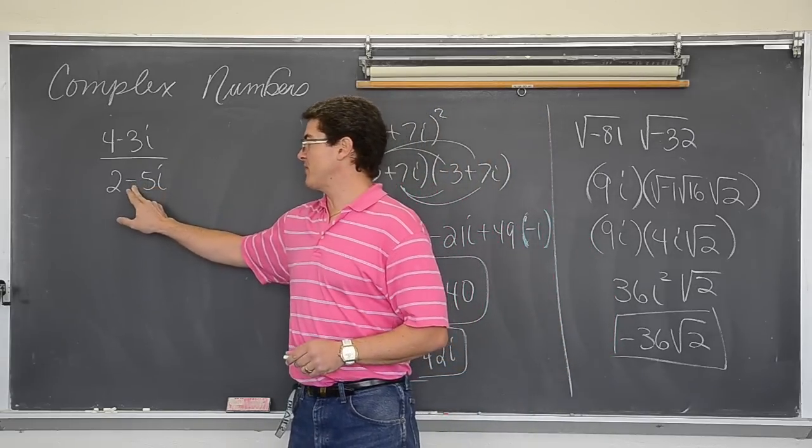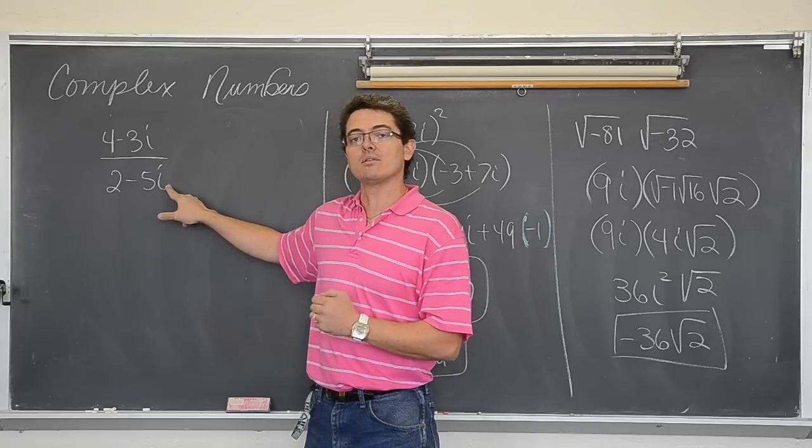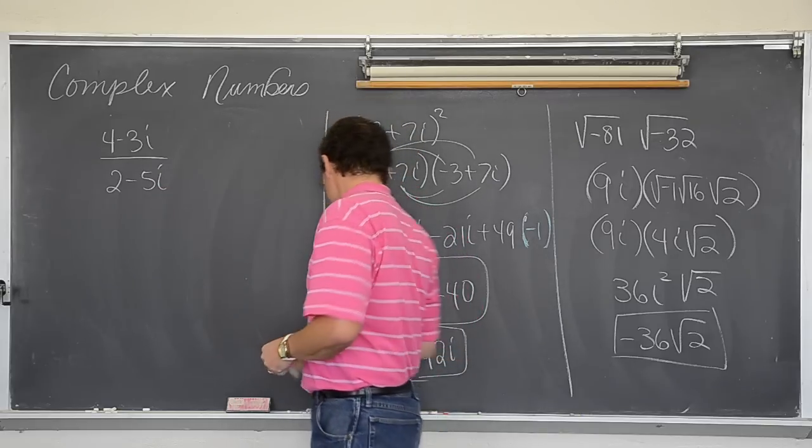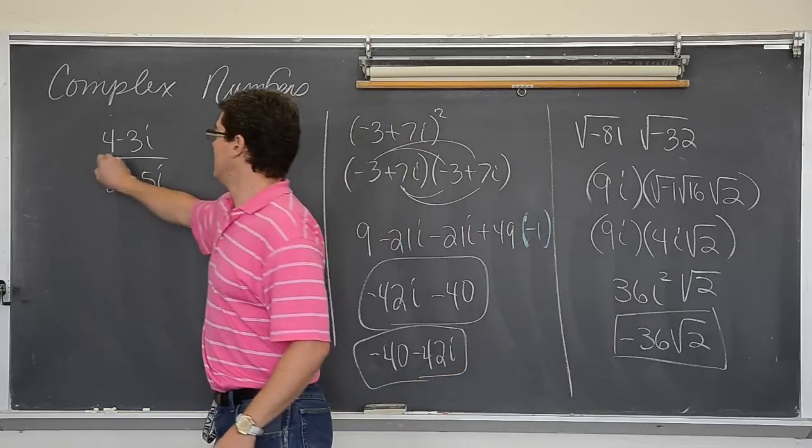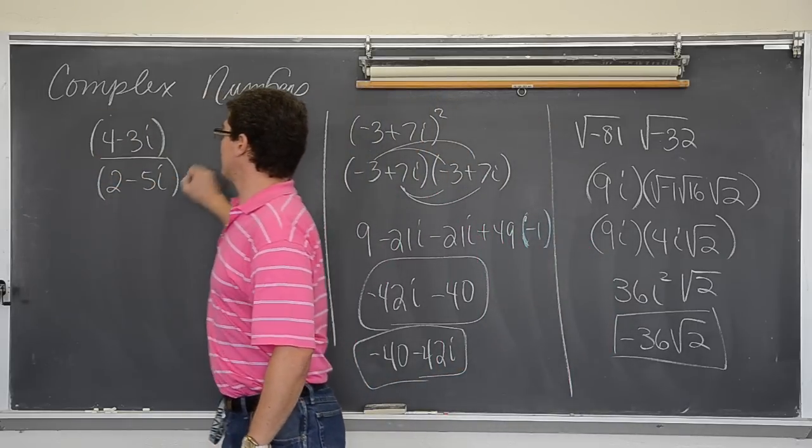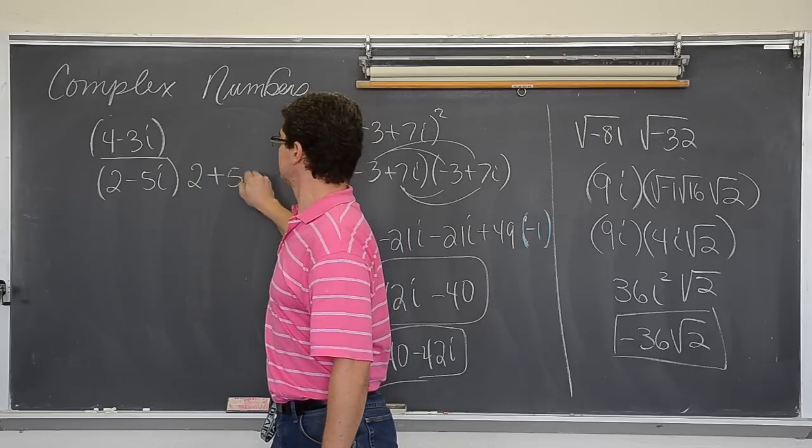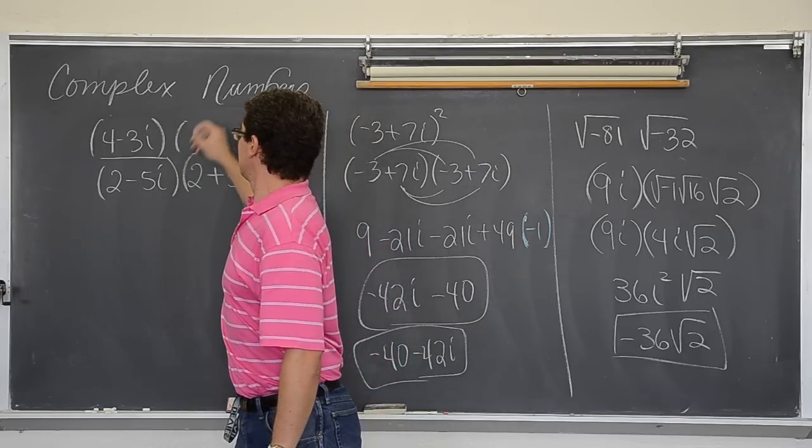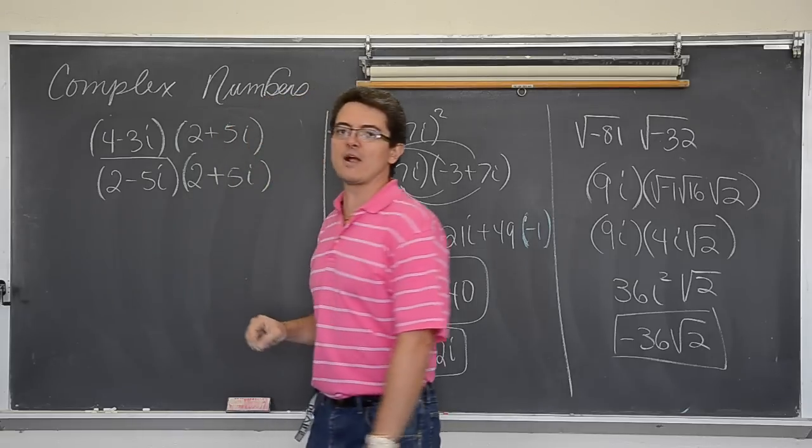We need to multiply by something that will get my square root of negative 1, my i, out of the denominator. And you do that when you have binomials by multiplying by something called the conjugate. Which means that you simply change the sign, the middle sign, and multiply that to the top and bottom of the fraction.